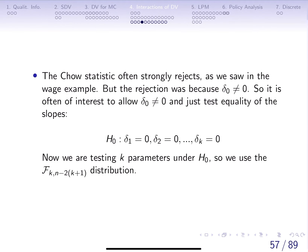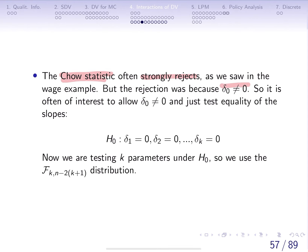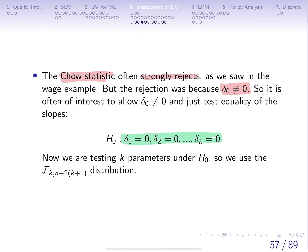Typically in models estimating salary on female and other variables, the Chow statistic or F-statistic will strongly reject. But that rejection often happens because delta-naught is significantly different from zero. So sometimes it's of more interest to allow for a joint test which is just testing the differences for those interaction terms.